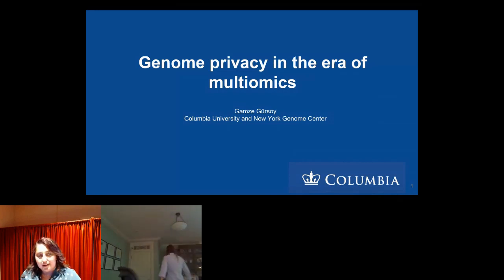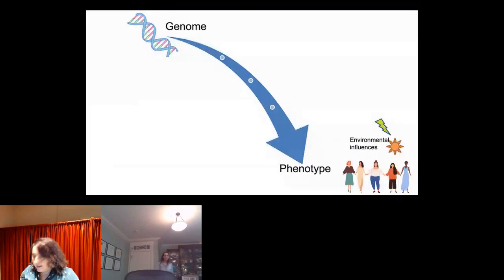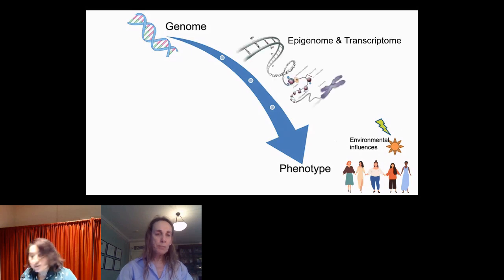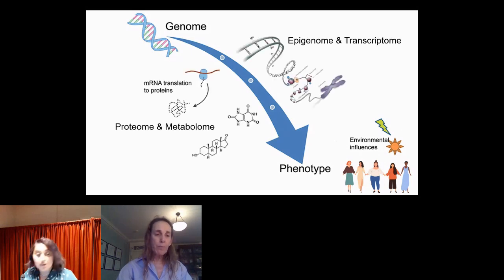Today I'm going to talk about genome privacy for functional genomics data. As was mentioned by Hoon in the beginning, right now we have tremendous advances in genomics. To make the connections between genomes and phenotypes, we don't only collect data from genomes, but we also collect data from personal epigenomes, transcriptomes, proteomes, and metabolomes at the population scale. This creates issues related to not only the analysis of this data, but also sharing, movement, and the privacy of the data.